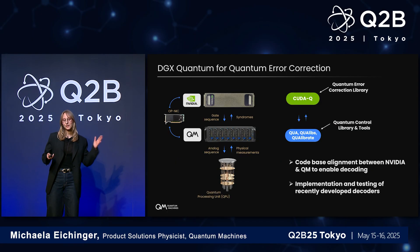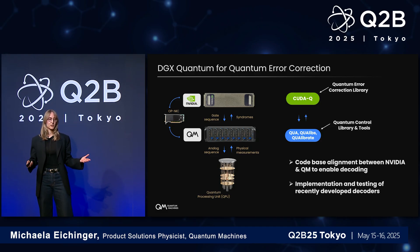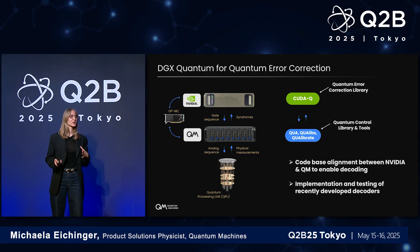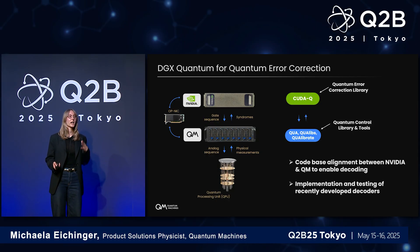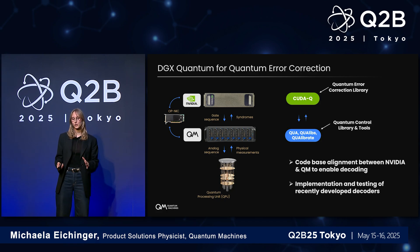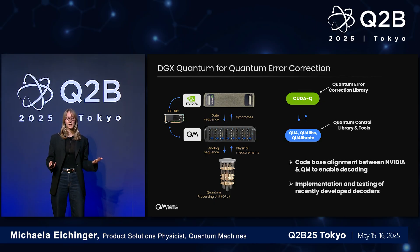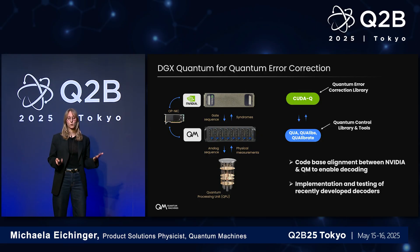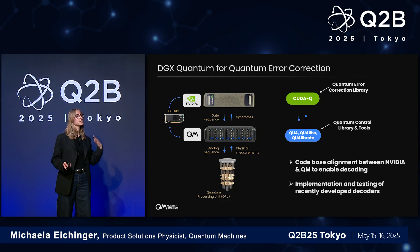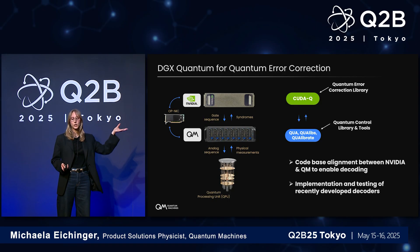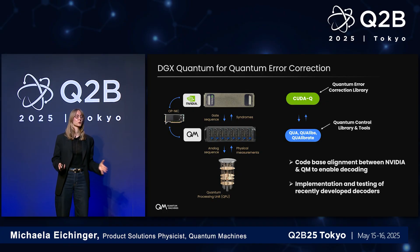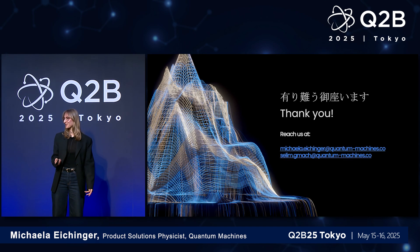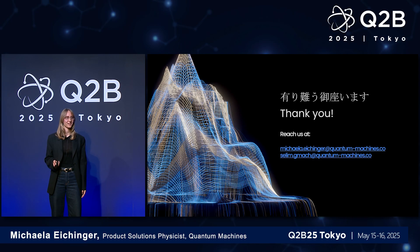To circle back to quantum error correction: DGX Quantum was built with quantum error correction in mind, facilitating a system that meets the requirements we need for fault tolerance. Calibration is just one example of what it allows you to do. We're working hard to achieve code-base alignment between NVIDIA and Quantum Machines to enable decoding and utilize all of the decoders that NVIDIA has already built. It's about having a nice software interface between CUDAQ and Quantum Machines' quantum control libraries. Thank you — I'm happy to take questions or find me and my team at our booth.